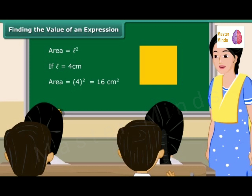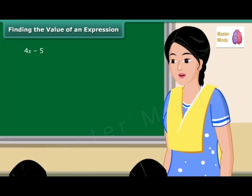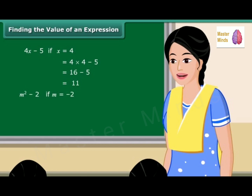Consider the expression 4X − 5. If the value of X equals 4, then the expression equals 4 × 4 − 5 = 16 − 5 = 11. Similarly, if M = −2, then the value of the expression M² − 2 will be equal to 2.